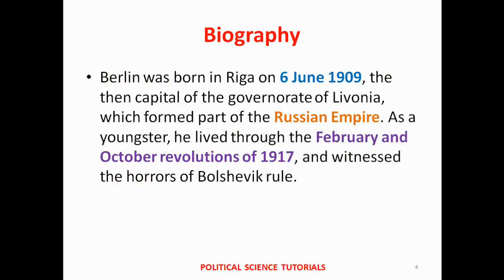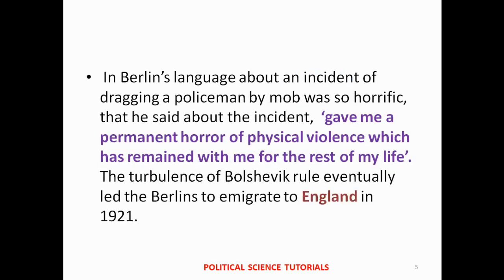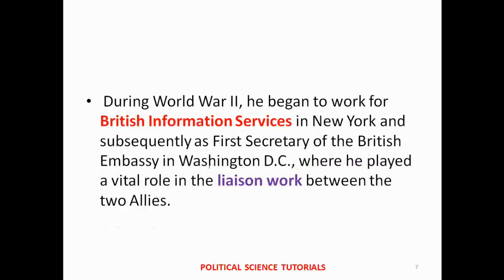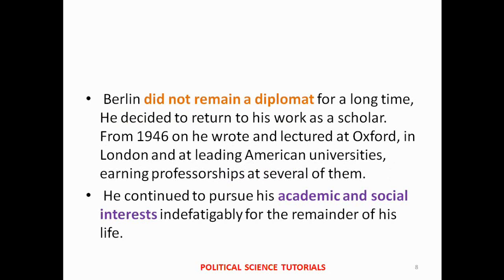By birth, Berlin was a Russian, but the turbulence of Bolshevik rule in Russia led the Berlin family to emigrate to England in the year 1921. He spent his school and college life in England, and it deeply affected Berlin's intellectual development. During the Second World War, Berlin worked as a diplomat on behalf of the British government. After the war, from 1946, he wrote and lectured at Oxford and then at American universities, continuing his academic and social interests for the rest of his life.